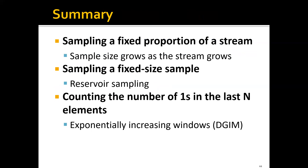To summarize, we have talked about sampling a fixed proportion of the stream, where the sample size grows as the stream grows. We also talked about sampling a fixed-size sample, which is the reservoir sampling algorithm. And last but not least, we talked about how to count the number of ones in the last n elements using the DGIM algorithm with exponentially increasing windows.